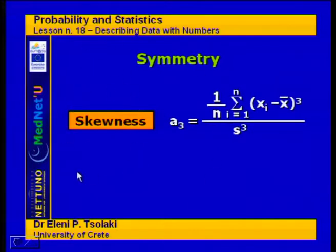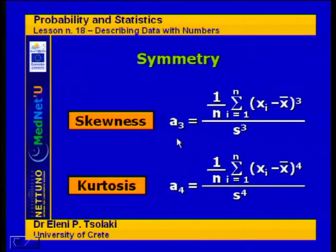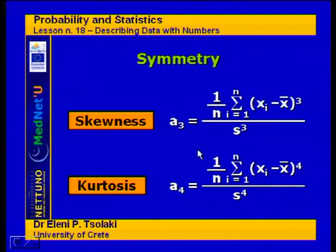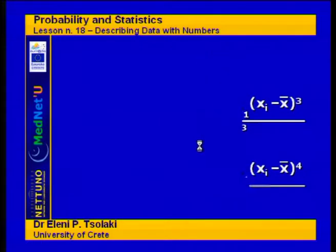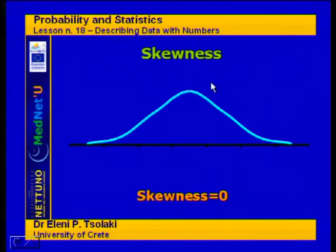Skewness can be calculated from its formula and kurtosis from its formula. For skewness, this part looks like the variance but is raised to the third power and divided by n rather than n minus 1. For kurtosis it is the same but raised to the fourth power. We divide by the sample standard deviation to the third power for skewness and to the fourth power for kurtosis.